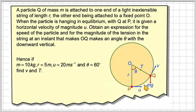Hence, if M is 10 kilograms, U is 20 metres per second, and R is 5 metres, and the angle here is 60 degrees, find the value of V and T.